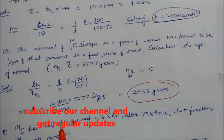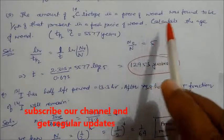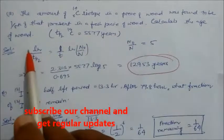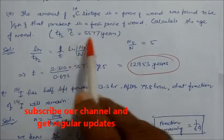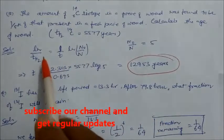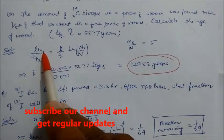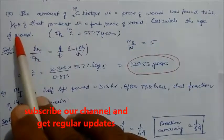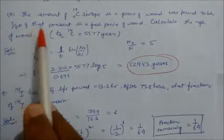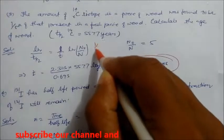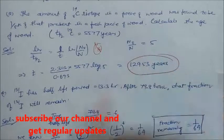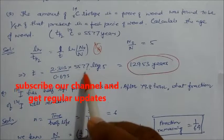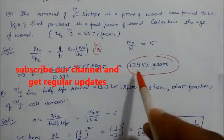Problem 3: The amount of C-14 isotope in a piece of wood was found to be 1/5th of that present in a fresh piece of wood. Calculate the age of the wood. Half-life of C-14 is 5770 years. Using first order kinetics, N₀/N = 5. Solving log 5 with the given half-life, you get t = 12,953 years.